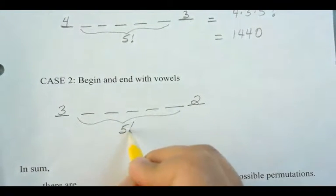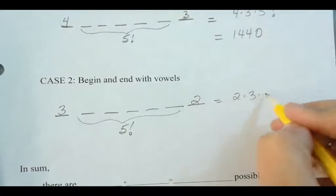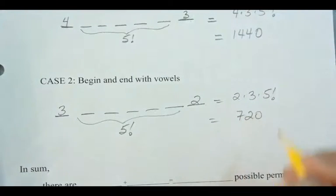Now here, I've got five factorial again. So this is two times three times five factorial. So a total of 720.